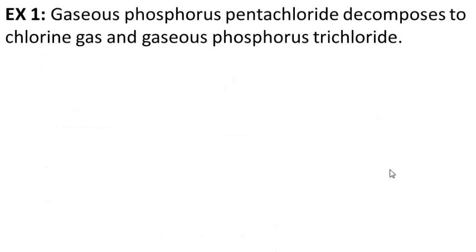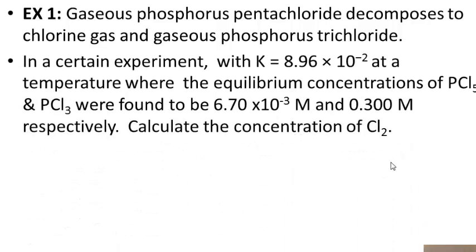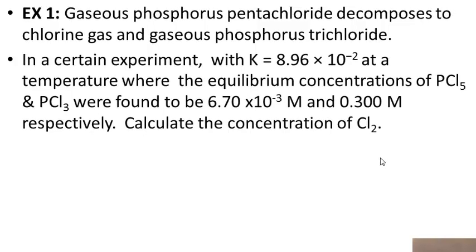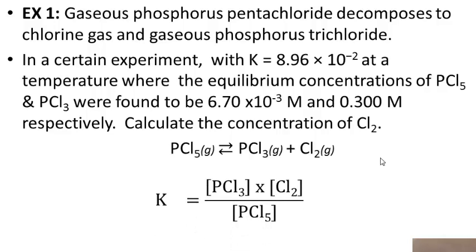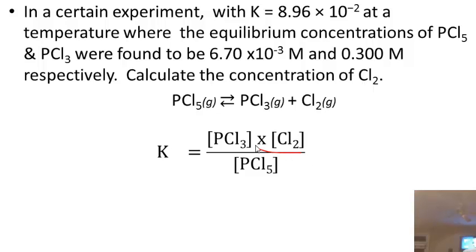Finally, let's do one example problem. The reaction is gaseous phosphorus pentachloride, PCl₅, decomposing to form chlorine gas and gaseous phosphorus trichloride, PCl₃. The K was found to be 8.96 times 10 to the minus 2 at a specific temperature. The equilibrium concentrations of PCl₅ and PCl₃ were found to be 6.70 times 10 to the minus 3 molar and 0.3 molar, respectively. We need to calculate the concentration of Cl₂. First, write the K expression: K equals the concentration of PCl₃ times the concentration of Cl₂ divided by the concentration of PCl₅.